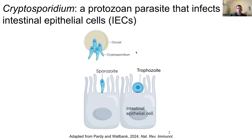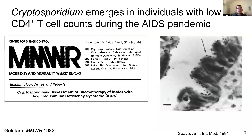Cryptosporidium is a unicellular protozoan apicomplexan parasite. The parasite infects cells of the epithelial lineage and undergoes multiple rounds of asexual and sexual replication within an intracellular but extracytoplasmic niche in the epithelium of a single host. In the 1980s during the AIDS pandemic, cryptosporidium rose to prominence as individuals with severely depressed CD4 T-cell counts presented with cryptosporidium disease leading to morbidity and mortality.